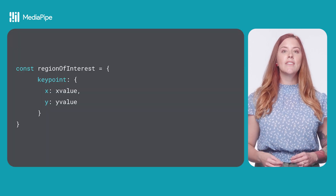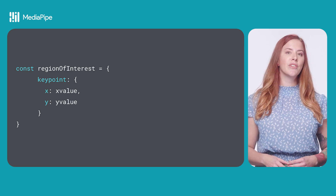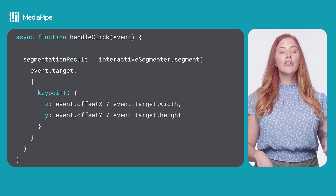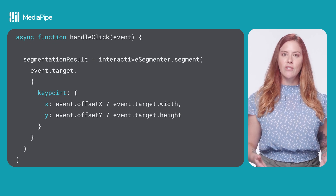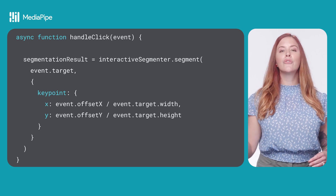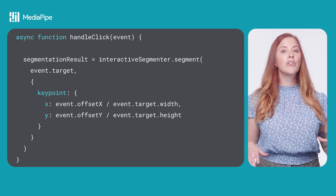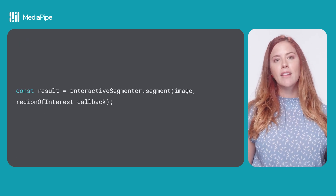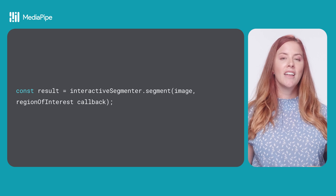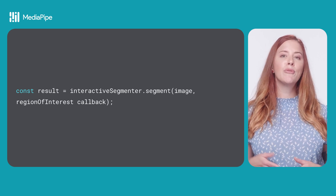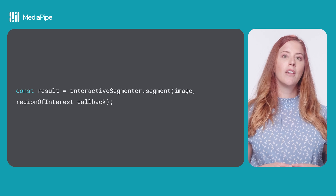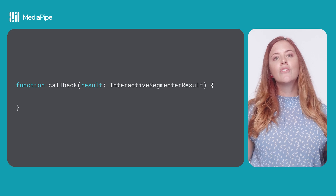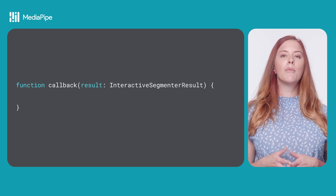The region of interest is a key point or scribble indicating the area the user wants to segment. You likely want the user to be able to select the region of interest, so your call to segment might look more like this, with a handleClick function triggered by an event and key points determined by where the user clicked on the image. There is also a version of the segment method that uses a callback. The callback-based method is more efficient and memory will be freed automatically, but the segmentation result resources will only exist when the callback is running, so use the other method if you need to access them later.